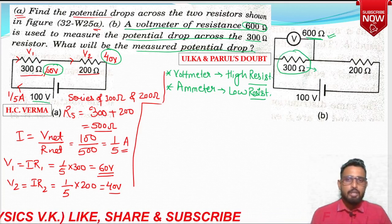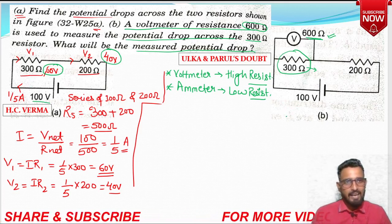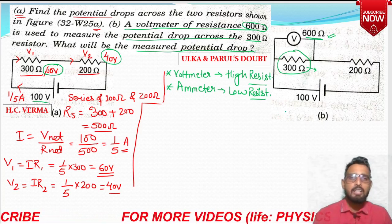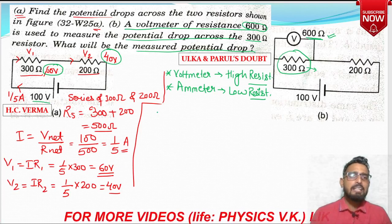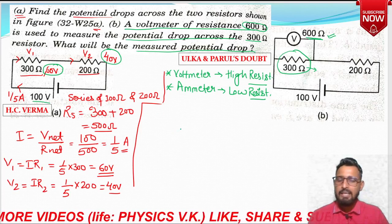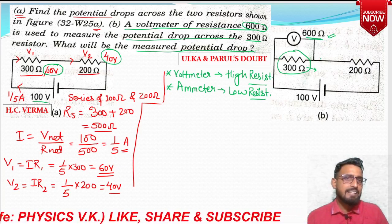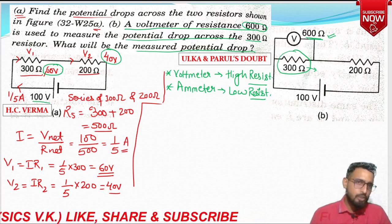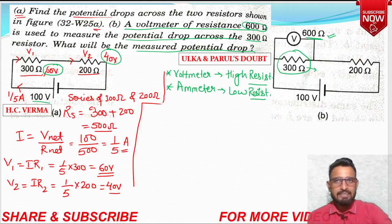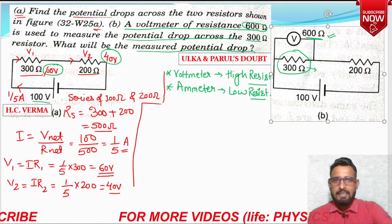Our voltmeter has very high resistance of 600 ohm, and it is connected in parallel. Now the question asks what will be the measured potential drop. The voltmeter will measure voltage across 300 ohm. But unlike the first diagram which had only two resistors, the second diagram has three resistances — the third being the voltmeter itself. So now 600 ohm and 300 ohm are in parallel, and then that combination is in series with 200 ohm. Let's work this out on the next slide to avoid confusion.